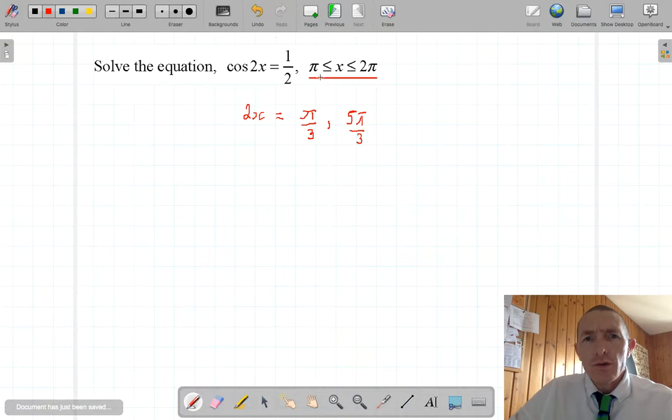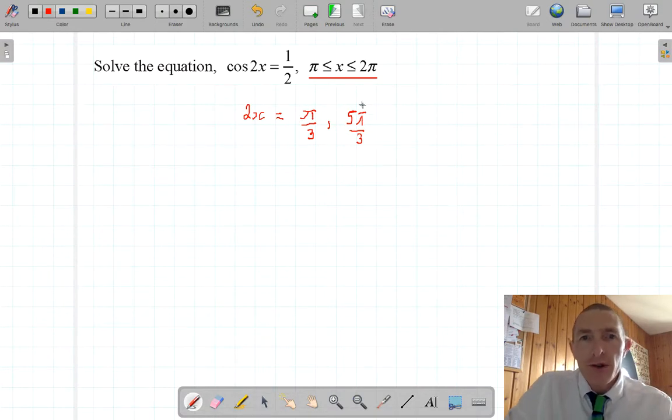First of all, the domain is between pi and 2pi, but this one's clearly out of the range of the domain. But that doesn't bother me at the moment. All I want to do is to find a nice set of solutions for 2x, and I'll think about the domain afterwards.